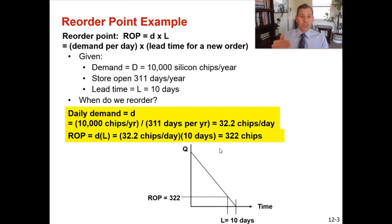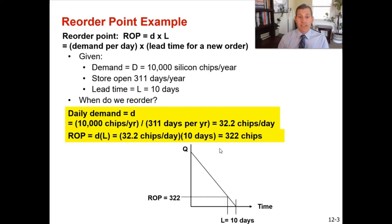Once you fall below that amount, you've got 10 days before you theoretically run out, so you reorder at that point once you hit below that number. That's it — it's a very simple calculation called the reorder point calculation. For our class, we will not include safety stock, but you can incorporate it in your careers.